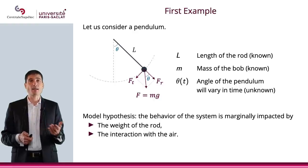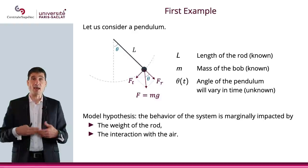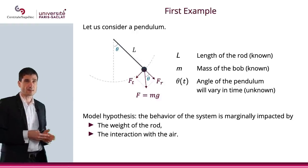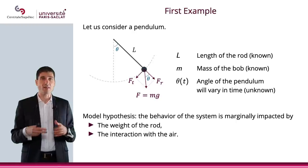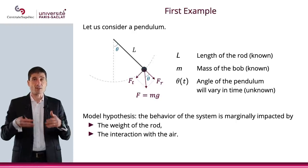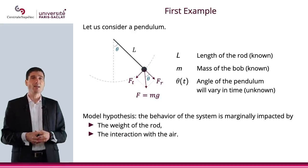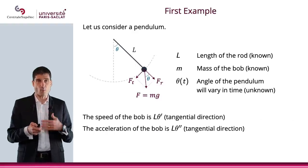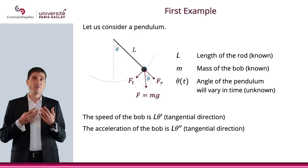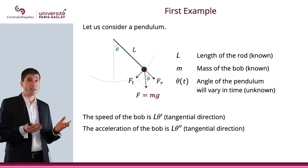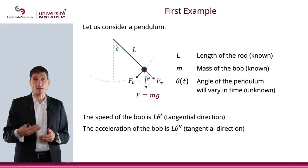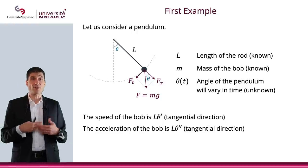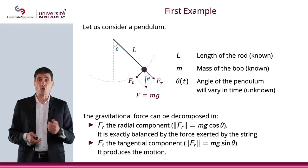Now, we need to make some modeling hypothesis. What we will assume is that the behavior of the system is marginally impacted by the weight of the rod. So basically that rod of length L, you don't really consider it. You consider it because it attaches to the bob, but you don't consider its weight. And then you don't consider the interaction with the air or any friction. Basically, all you look at is the mechanics of that bob. And if you do this, then you're interested in the speed of the bob, which will be Lθ'. θ' is the angular velocity of the bob and its acceleration, which will be Lθ''. And that takes place in the tangential direction.